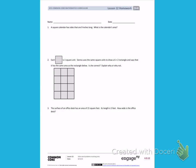This is Module 4, Lesson 12, Homework on the Front. Today's objective was to solve word problems involving area. Number 1. A square calendar has sides that are 9 inches long. What is the calendar's area?